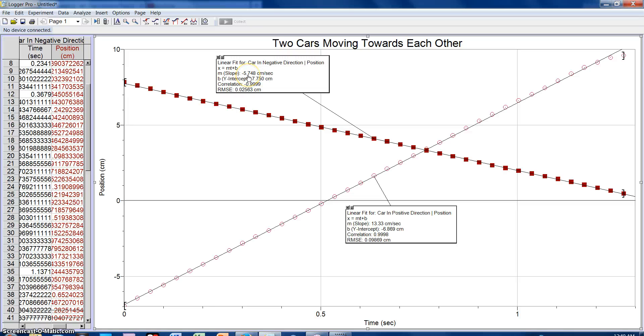With a slope or velocity of 5.748 centimeters per second in a negative direction, meaning for every second this car would move negative 5.748 centimeters in a negative direction from the initial position or starting line. Both cars here passed each other at approximately 0.7688 seconds.